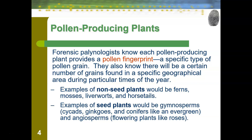There are two broad categories of plants. Non-seed plants — ferns, mosses, liverworts, and horsetails — are spore-producing plants. Seed plants include gymnosperms, like cycads, ginkgos, and conifers such as evergreens, and angiosperms, which are flowering plants like roses — and those are our pollen-producing plants.